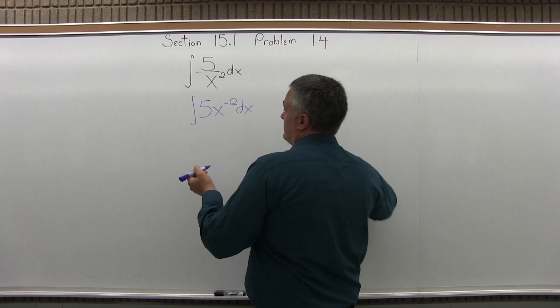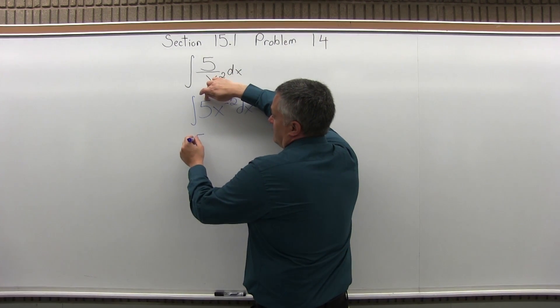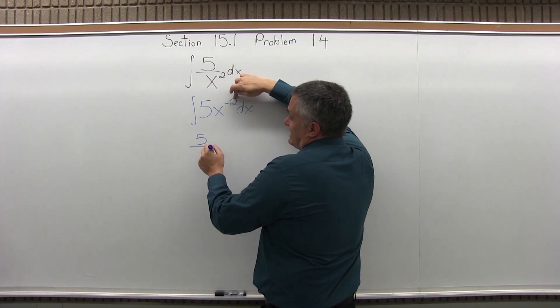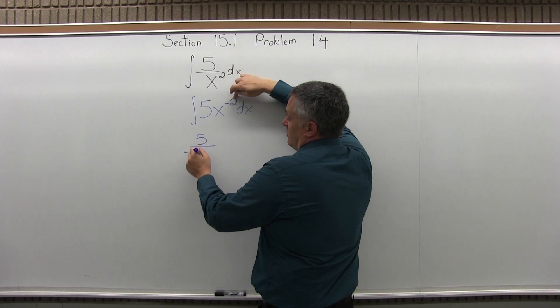And now, I use the same formula that I always use. So this 5 is the top of the fraction in the answer, and then in the bottom of the fraction is the exponent, which is minus 2, plus 1 more.